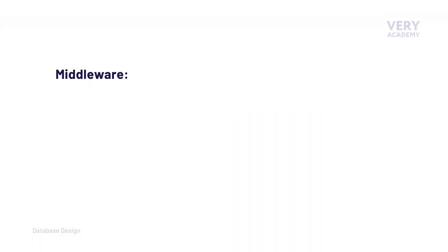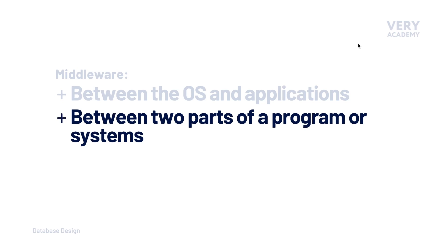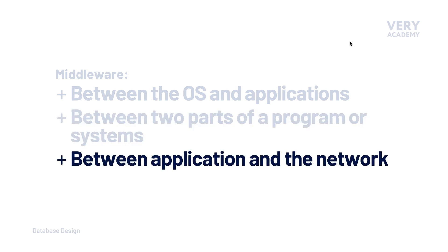I generally think of middleware as an intermediate layer of software — software providing a service, sometimes between the operating system and an application, sometimes between two parts of a program or system, or maybe between an application and the network. As the name implies, middleware is software that lays in between — an intermediate layer of software.